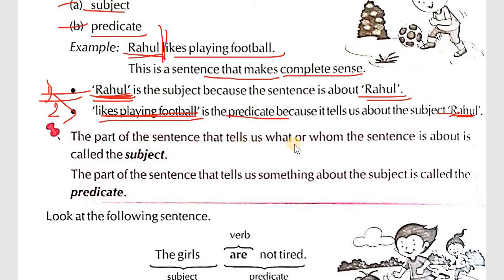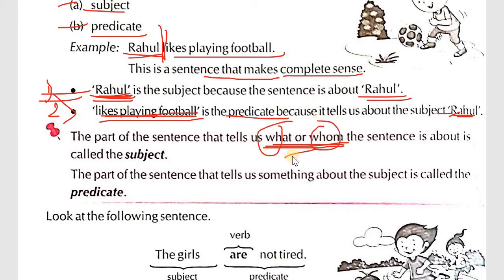The part of the sentence that tells us what or whom the sentence is about is the subject. The part that tells us something about the subject is the predicate. These are the definitions of subject and predicate.